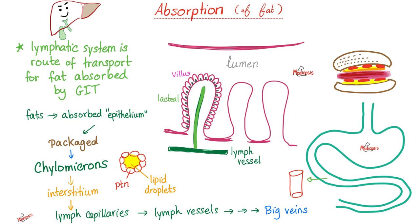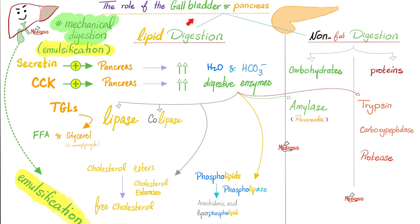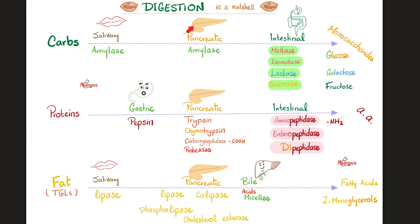Pause and review. To absorb fat, you need to digest fat — thank you pancreatic enzymes: lipase, colipase, cholesterol esterase, and phospholipase. And you need to emulsify the fat — thank you bile salts, thank you liver. This was the culmination of the last video.